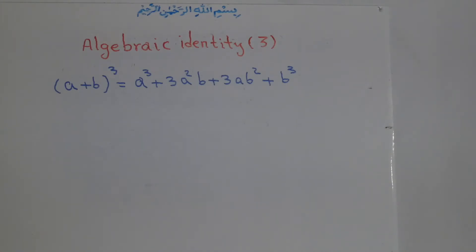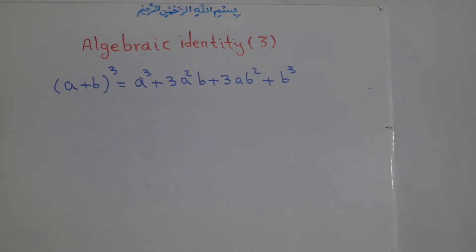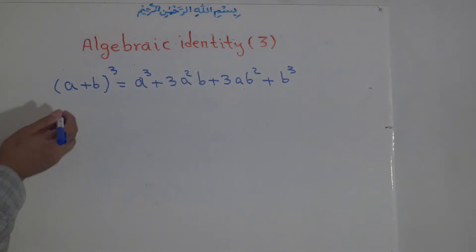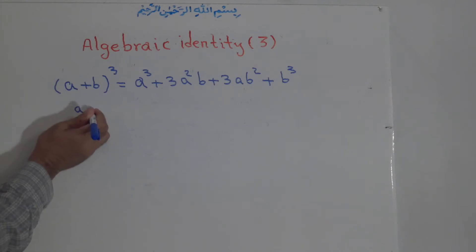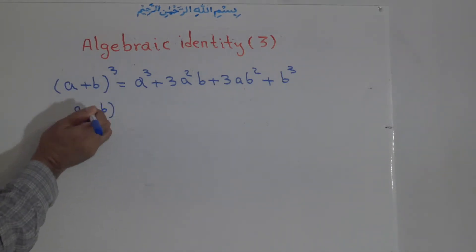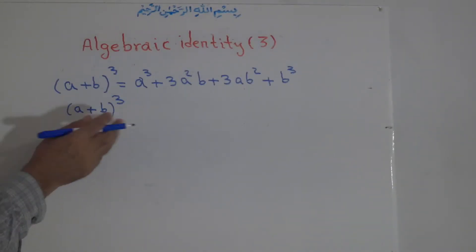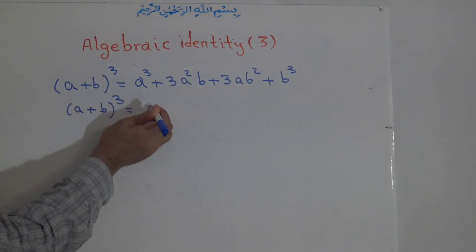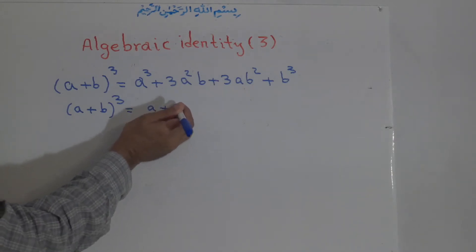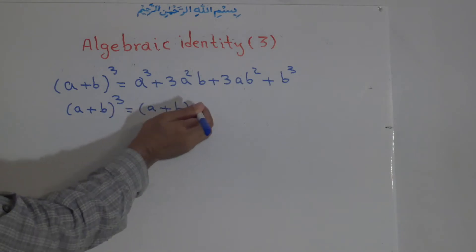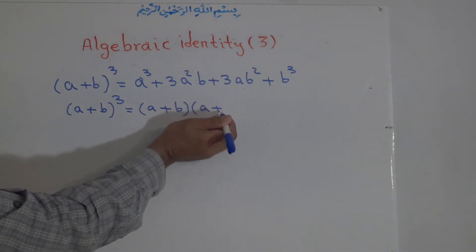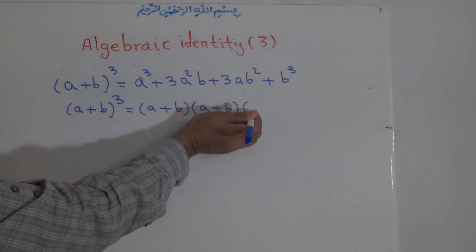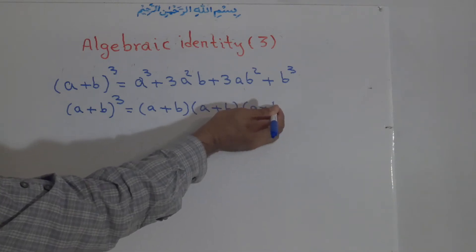How do we find or derive this identity using the binomial multiplication formula? We know that (a + b) to the power of 3 is equal to (a + b) times (a + b) times (a + b) — that is, (a + b) multiplied 3 times.